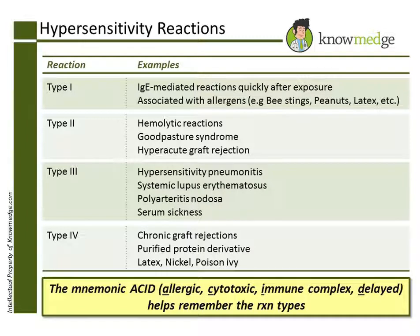Choice B: A patient with extreme itching due to poison ivy is a cell-mediated or Type 4 hypersensitivity reaction. Choice C: Latex allergy can be a Type 1 or Type 4 hypersensitivity reaction, which makes it the correct answer here.